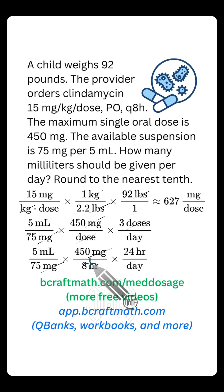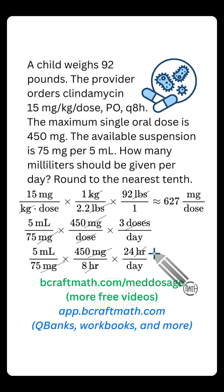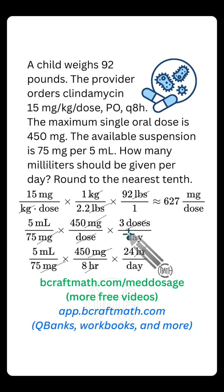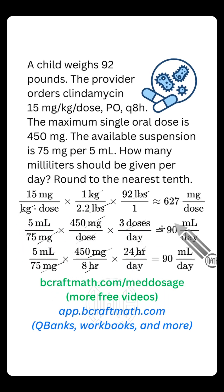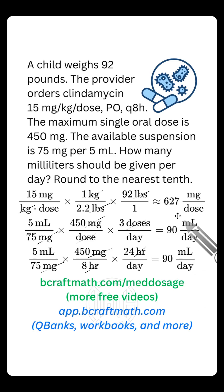If you give a dose every eight hours, that will be three times per day because eight goes into 24 three times. Speaking of that, if you did take the 450 milligrams every eight hours, we can still get rid of hours — there are 24 hours in a day. Looking at these two approaches, we have milliliters per day and milliliters per day. I promise you, if you multiply your top numbers and divide by your bottom numbers, either way you're going to get 90 milliliters per day.